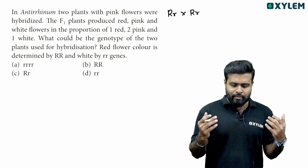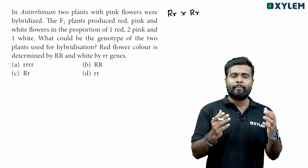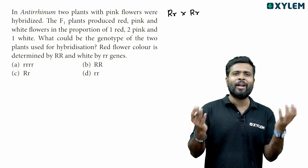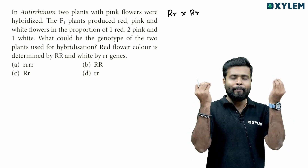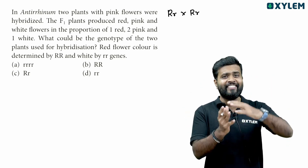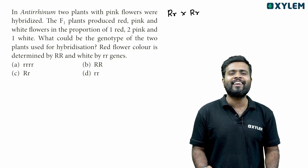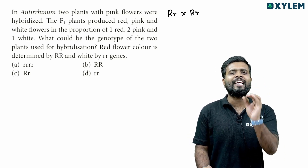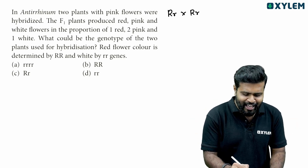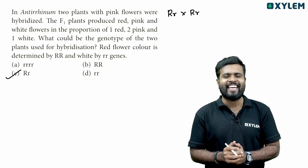The red flower color is determined by capital R, capital R, and white by small r, small r. If you look at the pink, it is a heterozygous genotype: capital R, small r. So option C is the right answer.